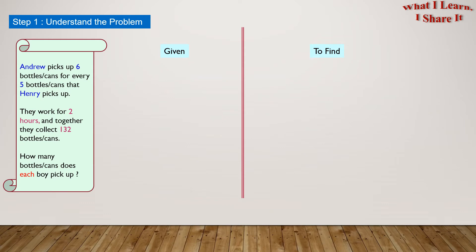Let's understand this a bit more. Andrew equals 6 and Henry equals 5, and their total is 11. But Andrew and Henry actually collected 132. So, we have to find how many Andrew collected and how many Henry collected.